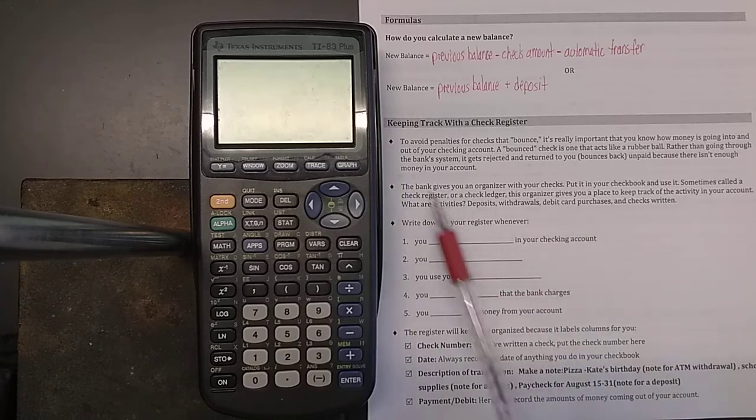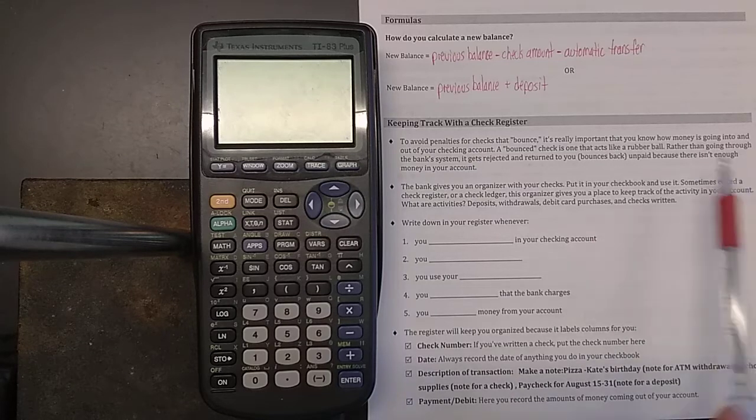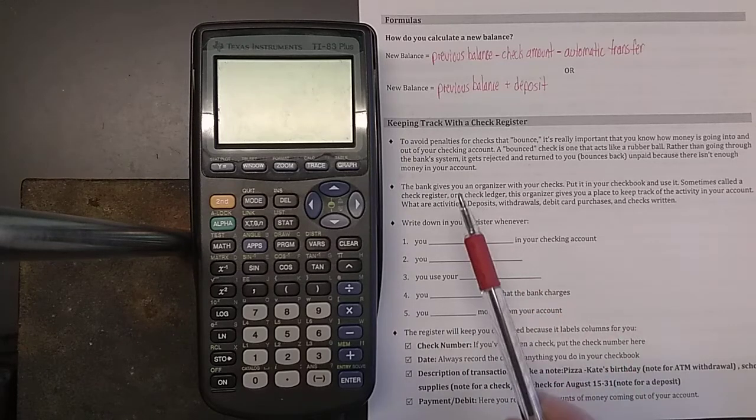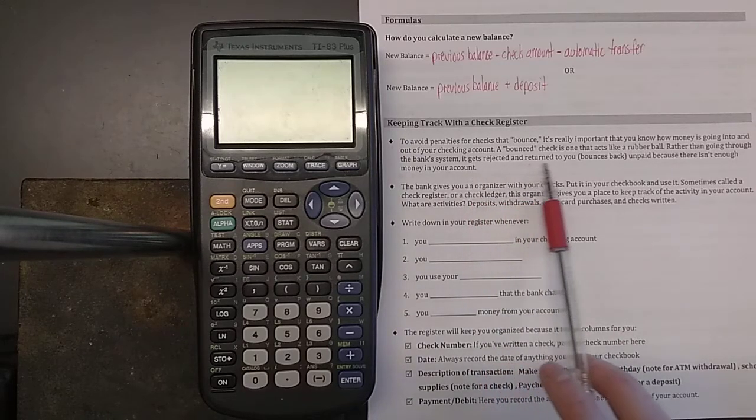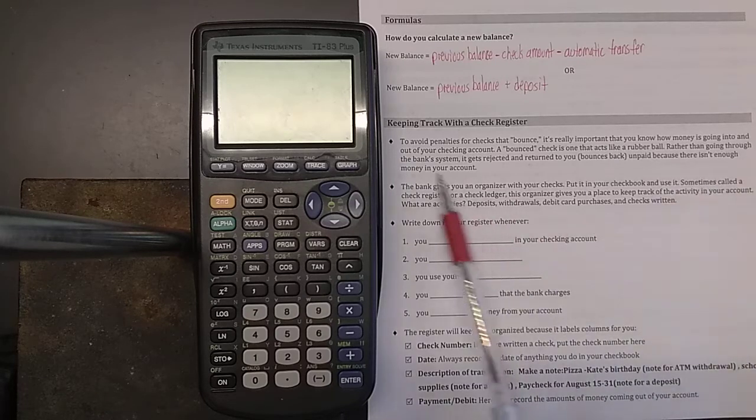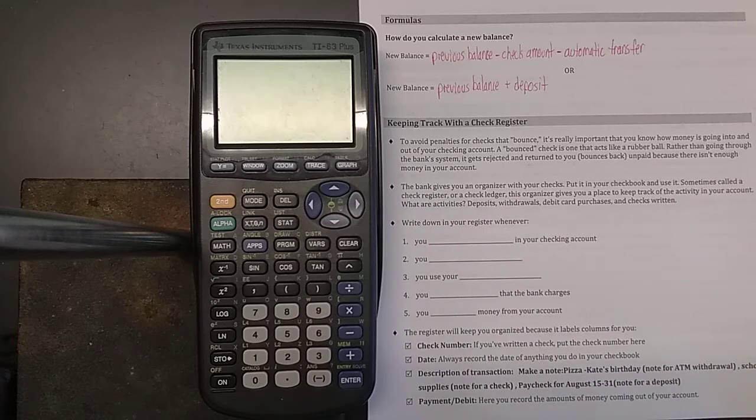What you're trying to avoid are checks that bounce. A bounced check is one that comes right back to you. It doesn't go to the person that it's intended. Instead of going through the bank's system for legitimizing and actually making all the switches with the money that it says to, the bounced check gets returned to you. It bounces back to you like a rubber ball without that amount of money getting paid out.